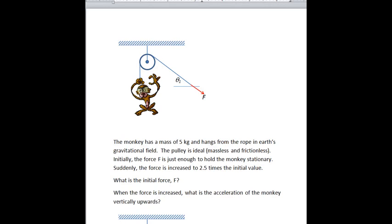Okay, here's our hero one more time suspended by a pulley with a rope over the pulley inclined at an angle theta. Initially there's a force F that's just enough to hold the monkey stationary, but then suddenly the force is increased to 2.5 times the initial value, or 2.5F.